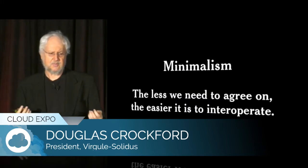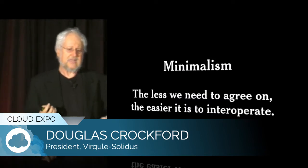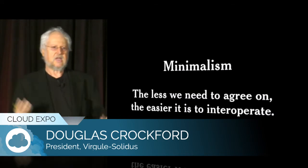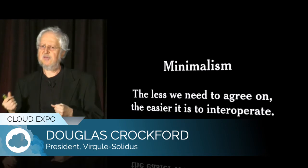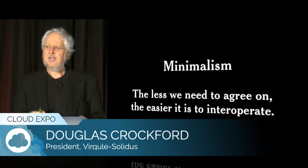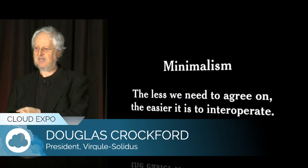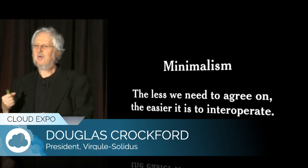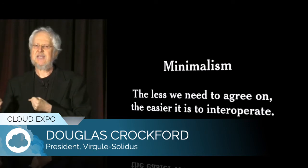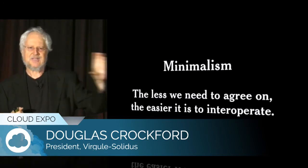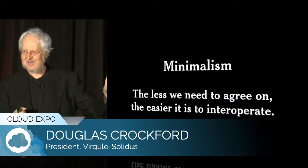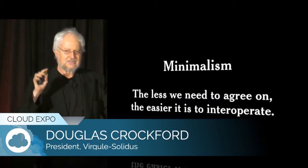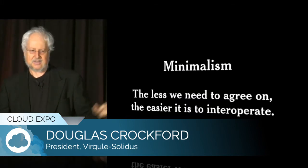JSON also embraces minimalism — the principle that the less we need to agree on, the easier it is to interoperate. We see a lot of standards where the committee couldn't agree on A or B, so they say let's do A and B, making the standard twice as complex. Or they can't decide between A and B, so they do C — the mutually disagreeable compromise — which doesn't serve anybody. JSON is just this one simple thing that works, and that's all it is.